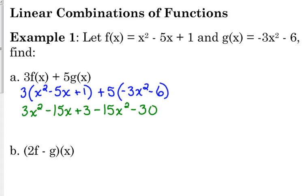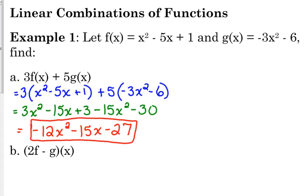And final step is going to be to simplify, combine like terms. So we've got negative 12x squared minus 15x minus 27. And pretty straightforward. You just got to be careful with those computations. Make sure that you're careful with your signs. Keep it pretty neat and organized. All right.